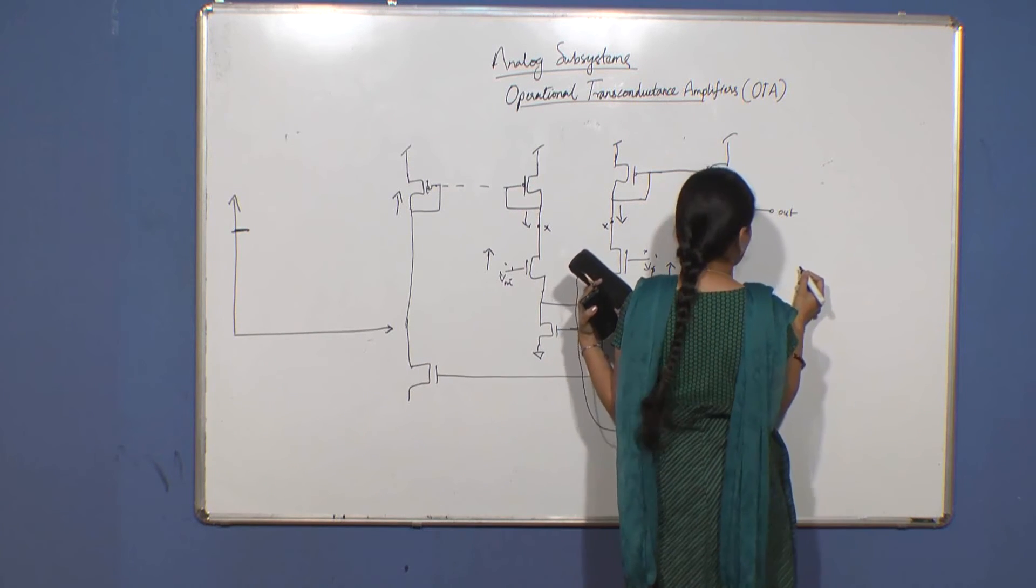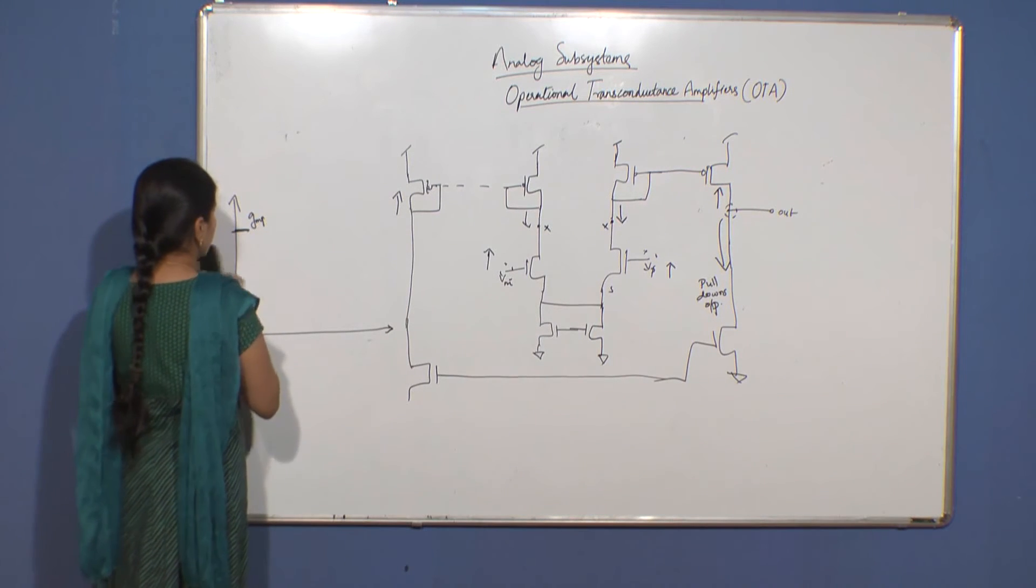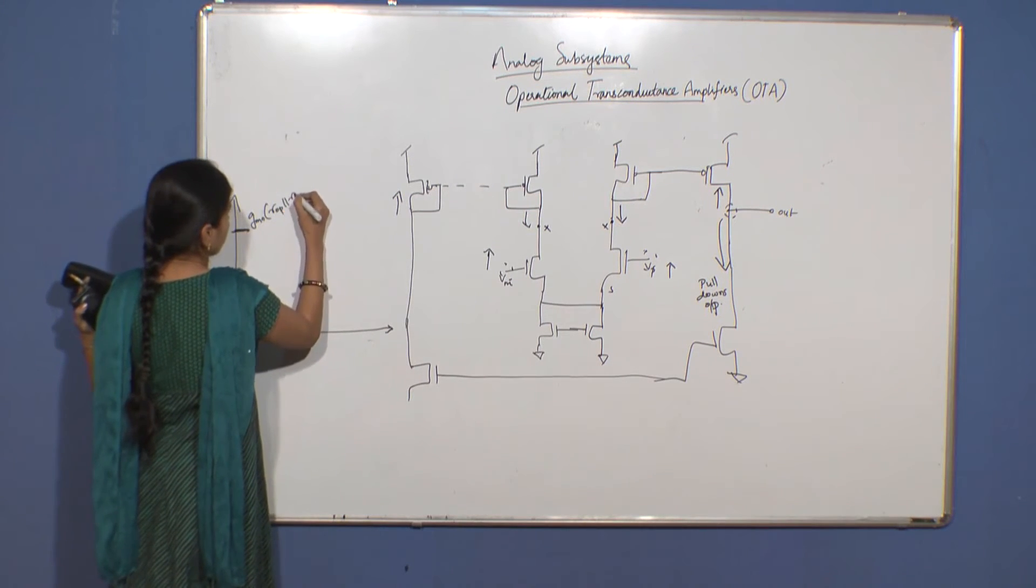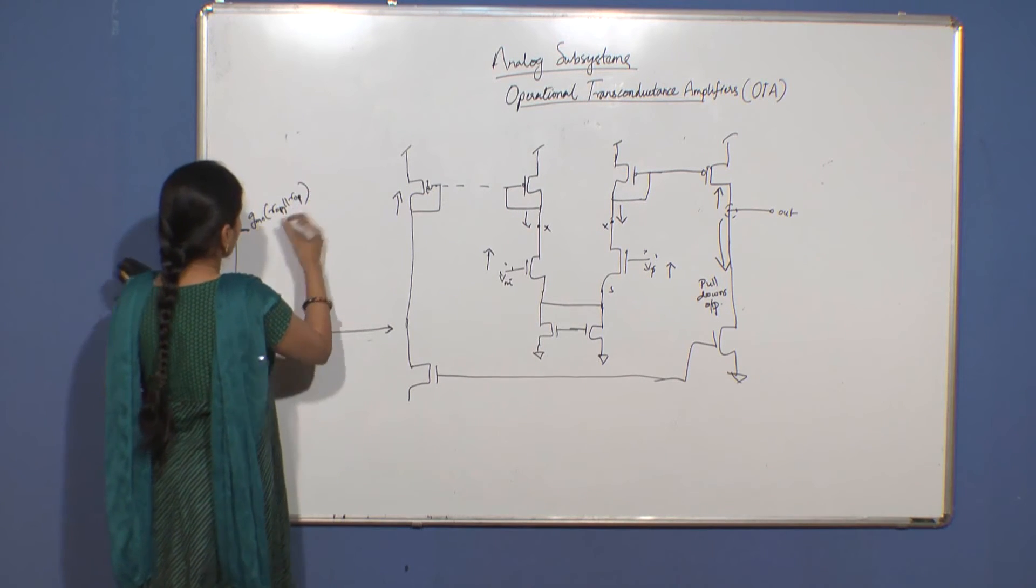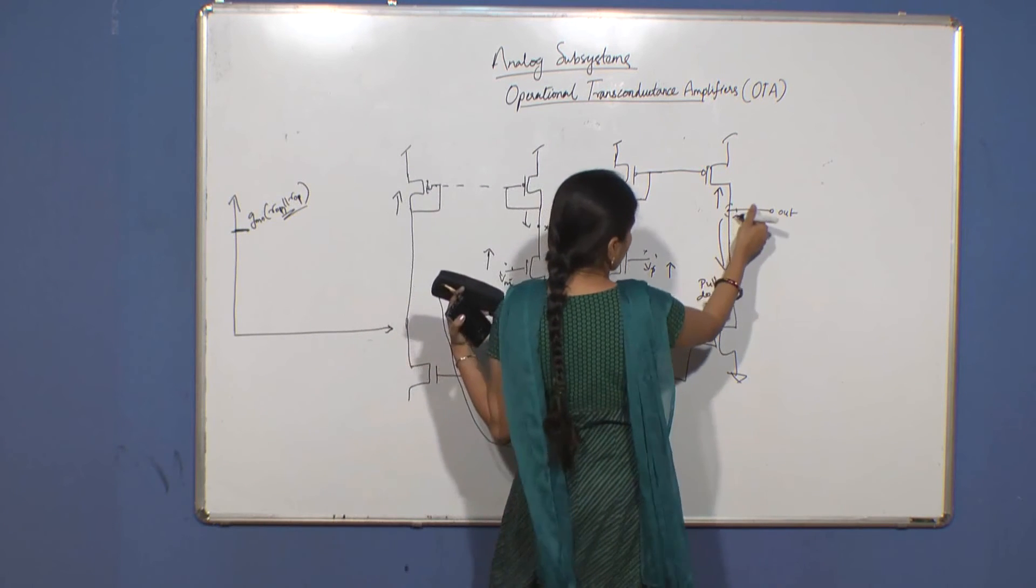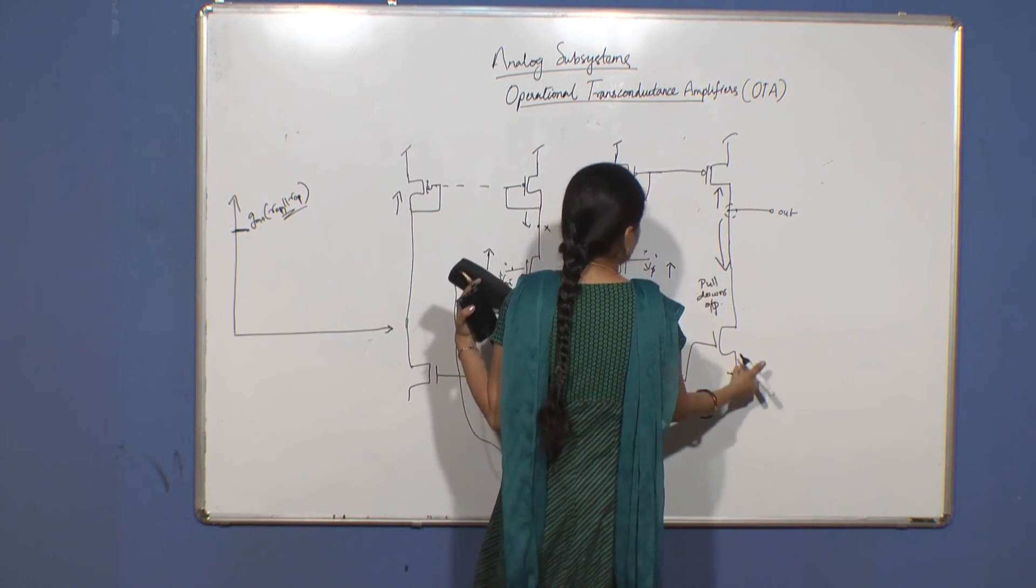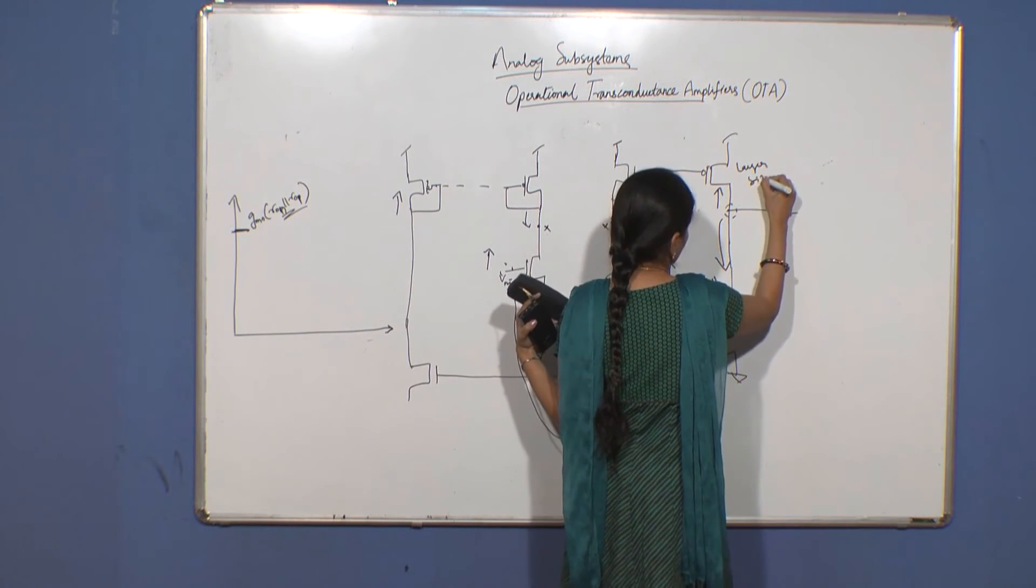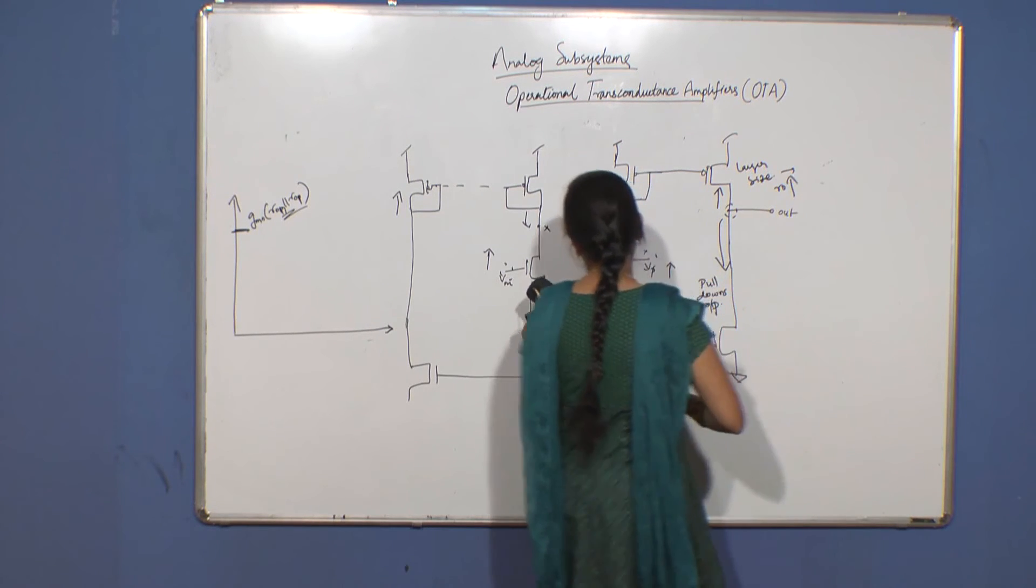So your gain will be increased, which is equal to gmn times r0p in parallel with ron in parallel with rop. Your ron and rop are now actually the current mirror devices which have larger sizes, so higher r0.